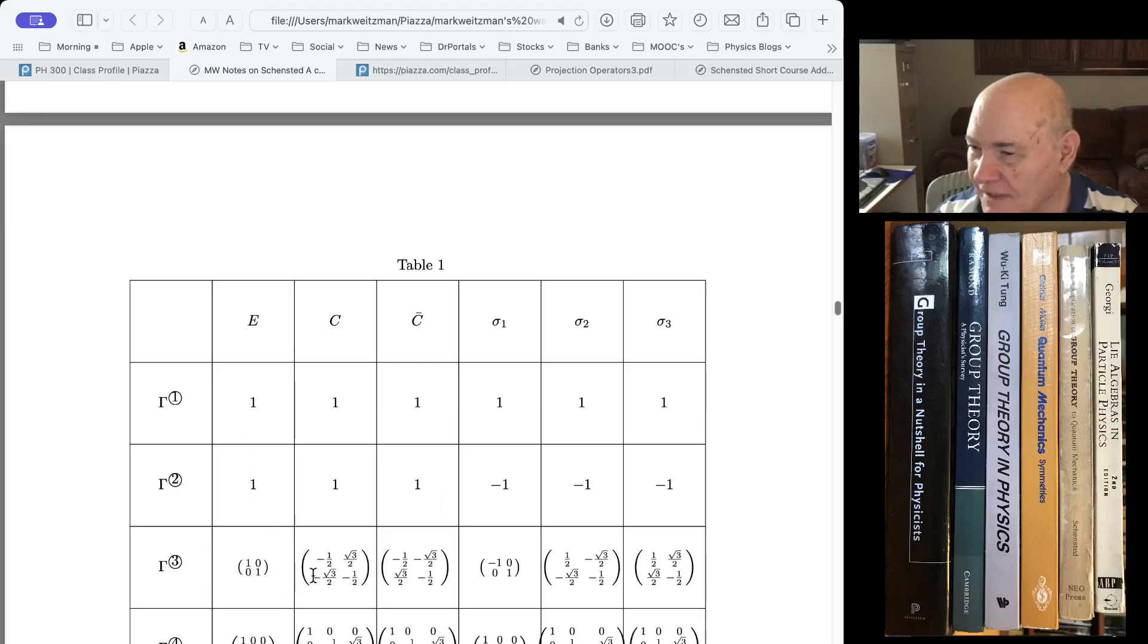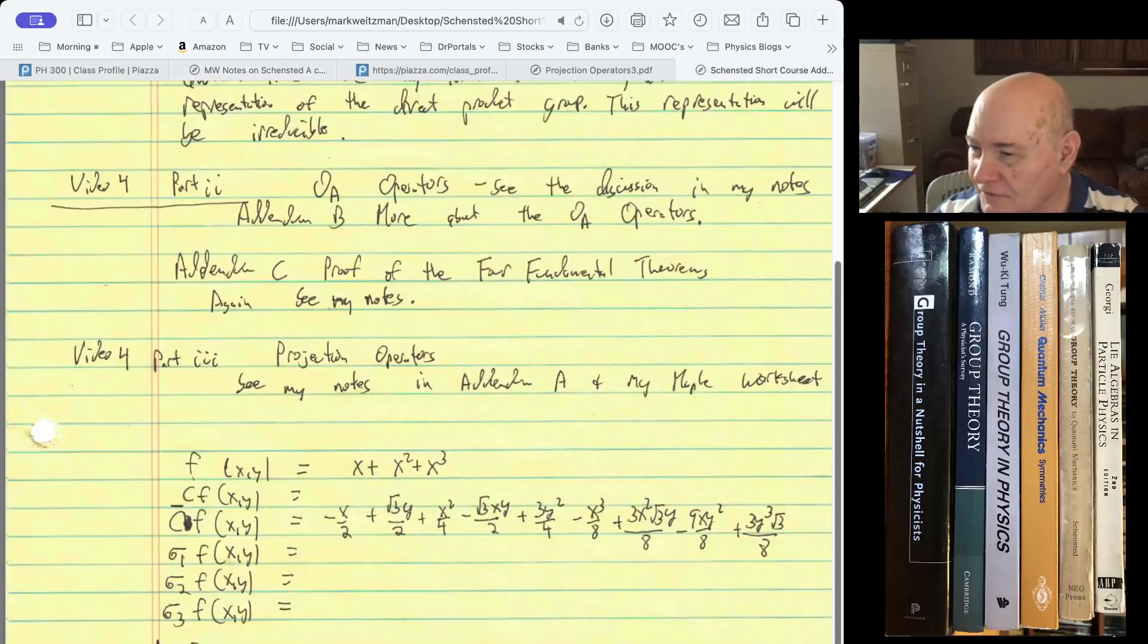And you get these functions over here. And interestingly enough, these do transform as partner pairs. If you were to substitute a coordinate change in f1, then you would find that it's equal to this.